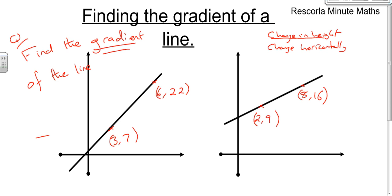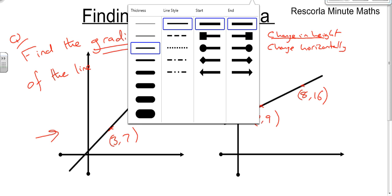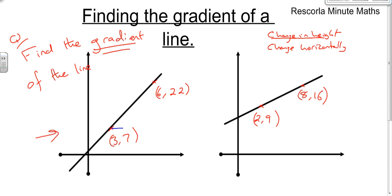So if we have a look at our first question over here, what we've got to do is see how far our line has gone across and how far it's gone up. So we draw a triangle, go straight across and go straight up to form a right angle triangle.